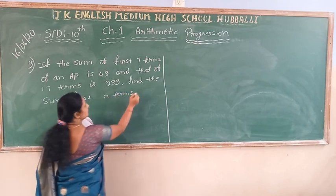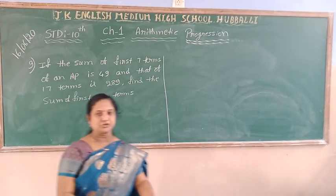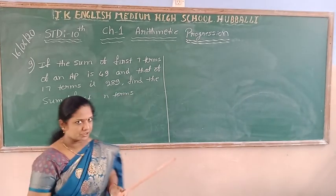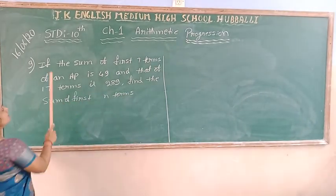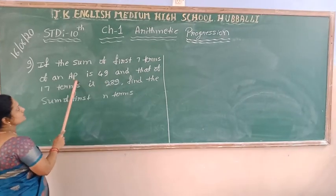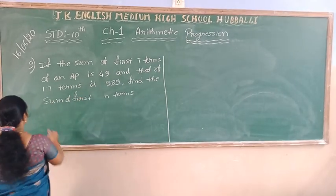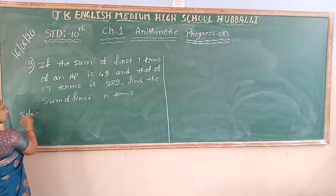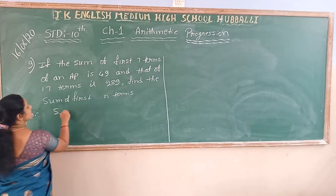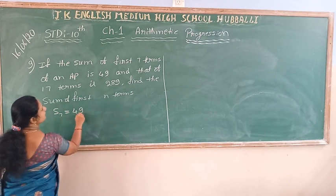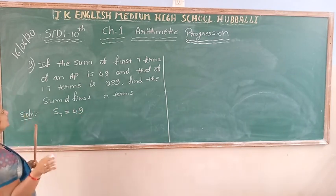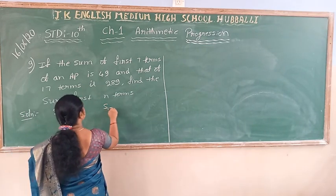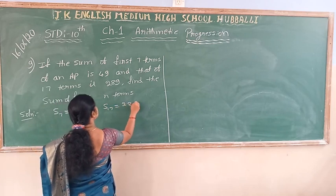I am going to read the question once again so you understand it first. What they have given: sum of 7 terms is equal to 49, and the sum of 17 terms is equal to 289.